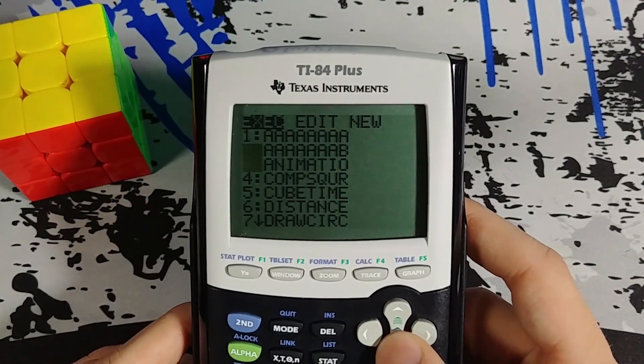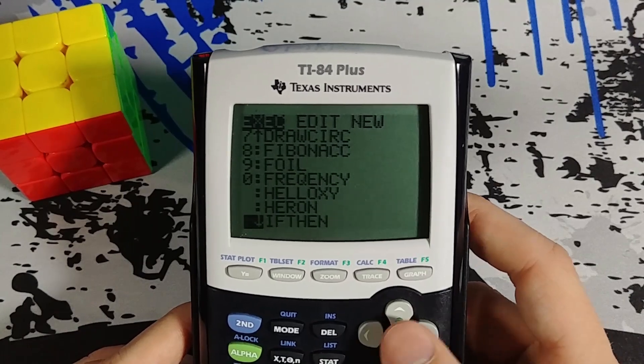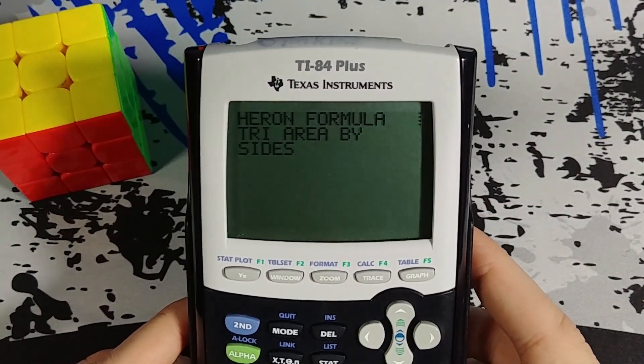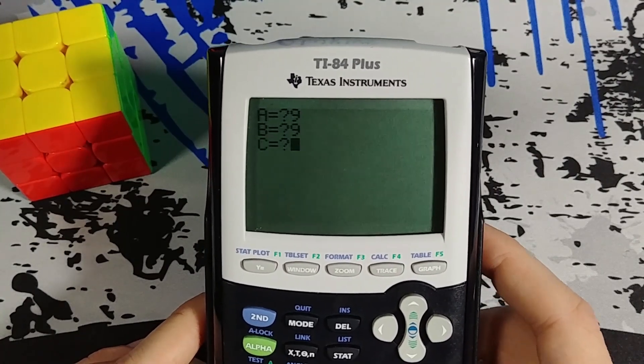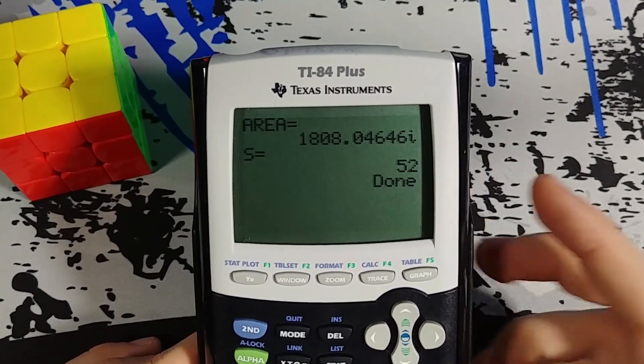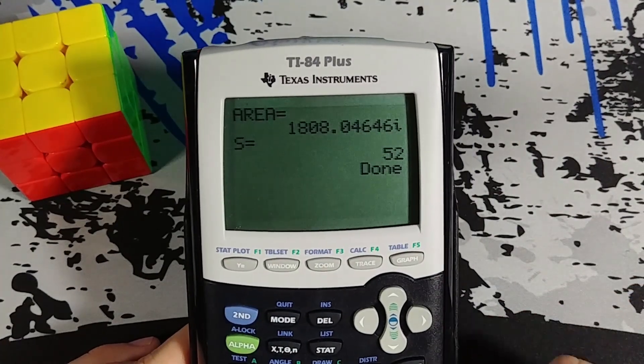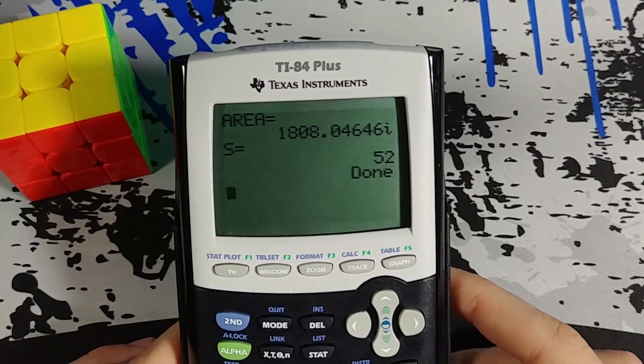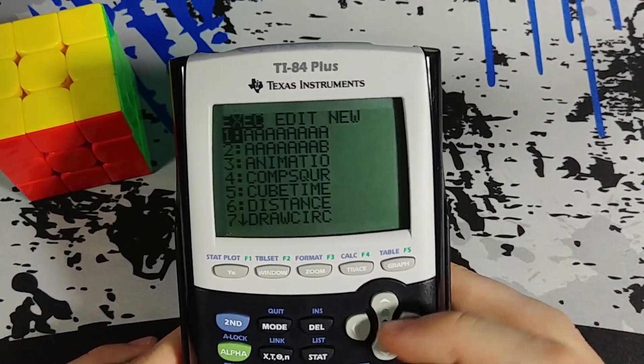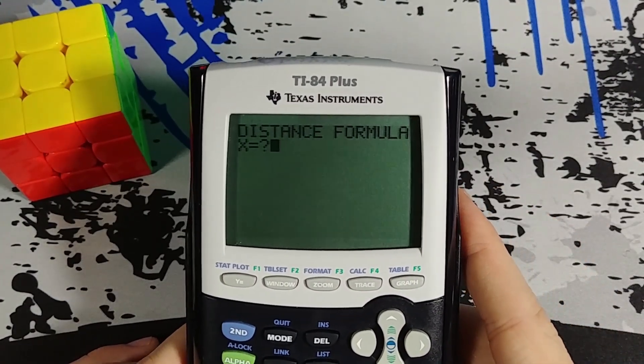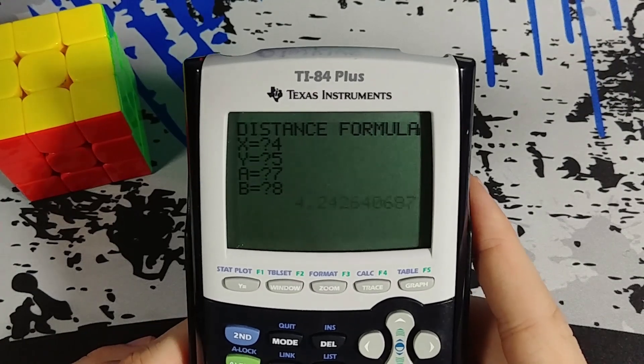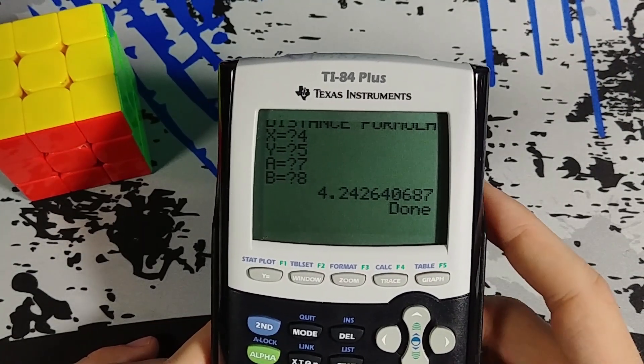Like for example, the Heron formula. This is the area of a triangle by its sides. And there's my area. That's incredibly useful in any type of geometry. Another example is the distance formula. You know, it's very convenient just to plug in two points and find out your distance.